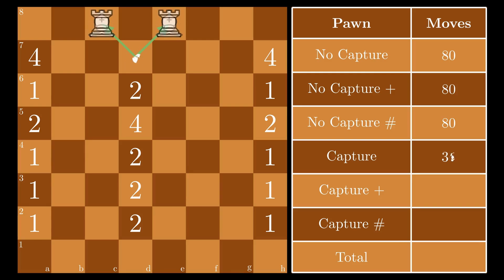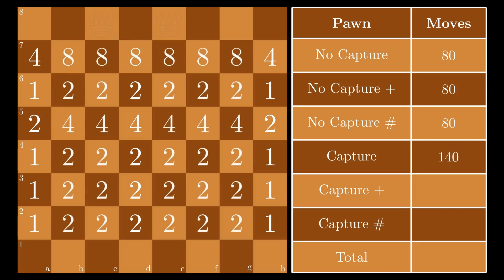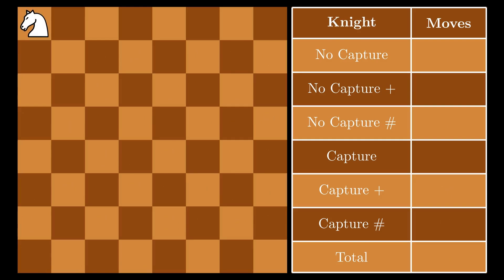The math is nice here, as 2 capture options doubles the number of potential moves a pawn has. In total, there are 140 ways a pawn can be used to capture another piece. Like before, these are all possible with checks or checkmates resulting in a grand total of 660 pawn moves in the game. Performing this calculation is a bit easier for the remaining pieces, even the knight with its ridiculous jumping move.